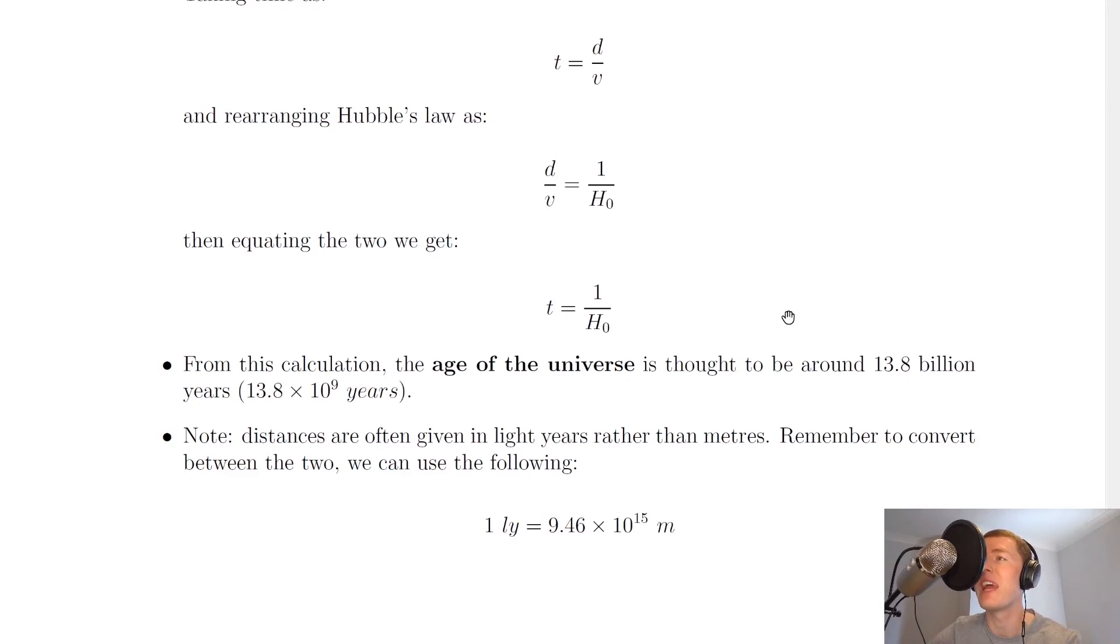So t equals 1 over H₀ will allow us to estimate a value for the age of the universe. From this calculation, the age of the universe is thought to be around 13.8 billion years old, i.e. 13.8 × 10⁹ years.